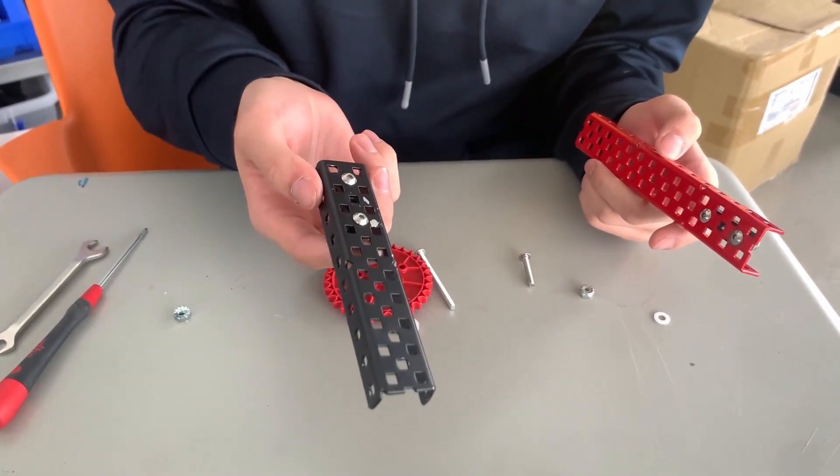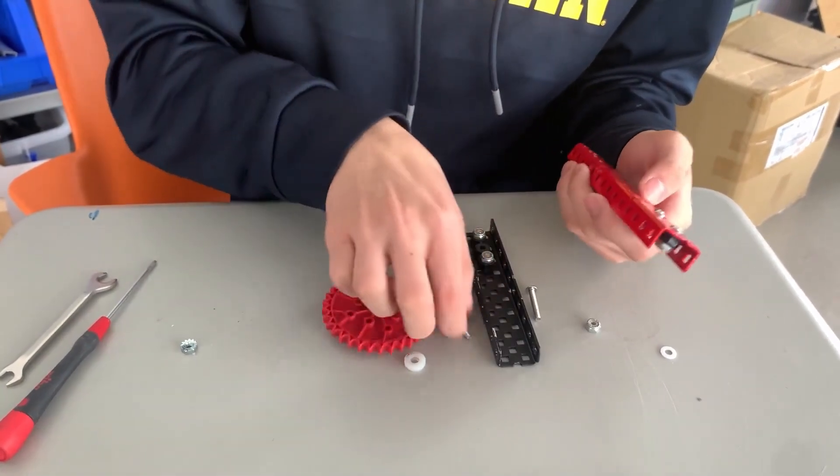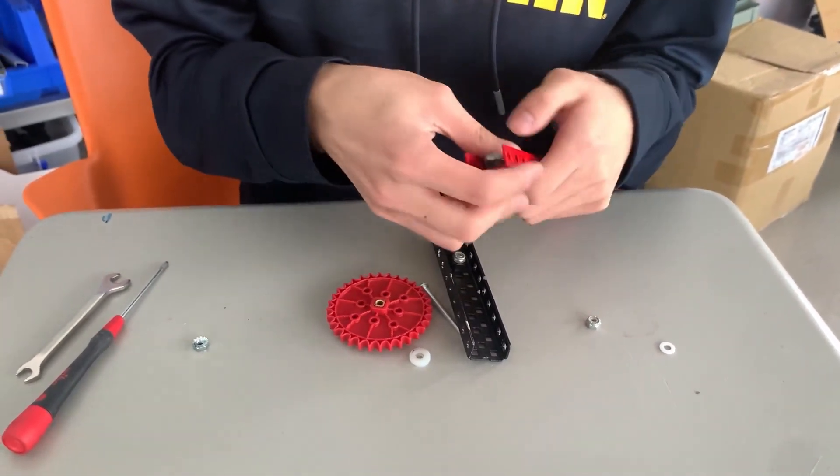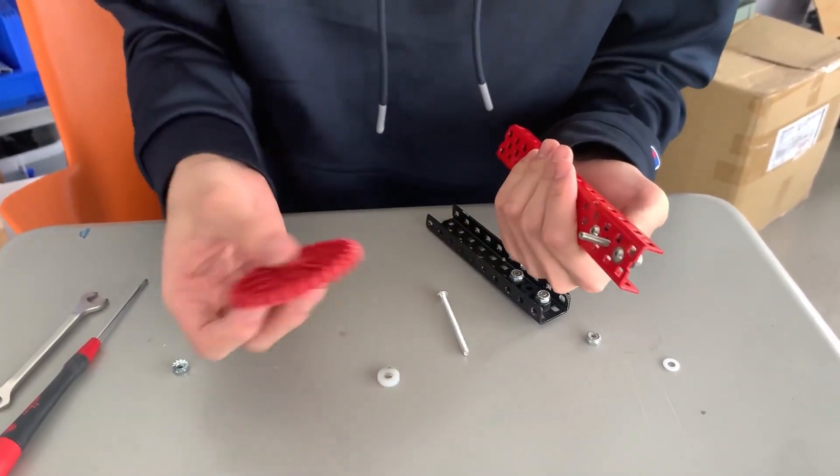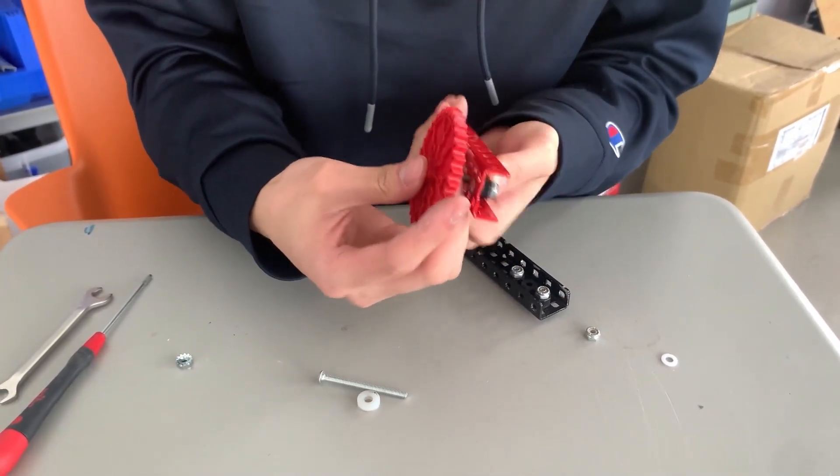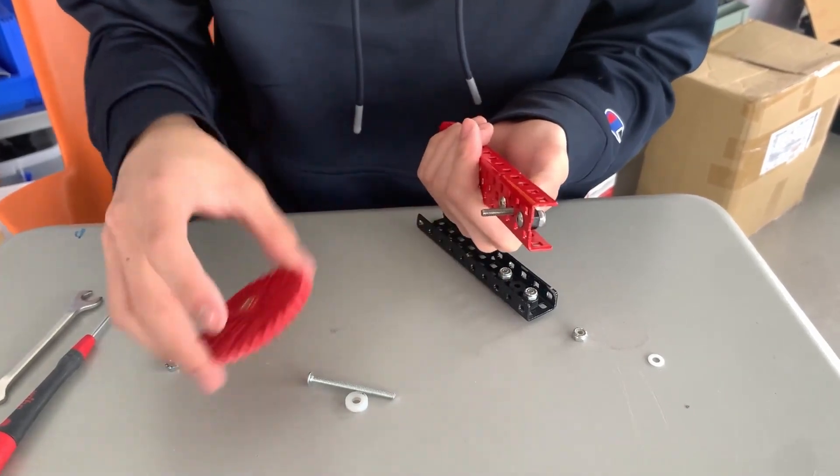In this case, I'll be using a C-channel to demonstrate. But it can be really anything, as long as it spins around the screw. As you can see over here, it spins smoothly. But it can also be something like a sprocket that spins around here. Really, anything goes.